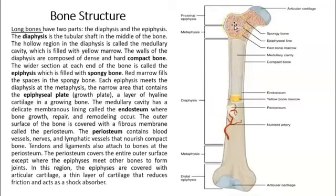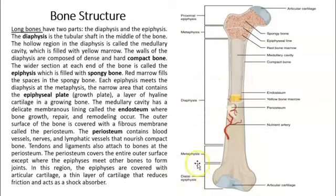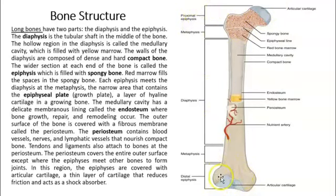In the case of long bones, the top of the bone is the epiphysis, the middle is the diaphysis, and the bottom is again the epiphysis — so there are two epiphyses and one diaphysis. Using the femur as an example, the epiphysis closer to your body is the proximal epiphysis, and the one farther from your body is the distal epiphysis.